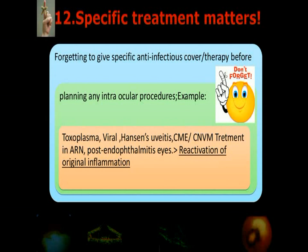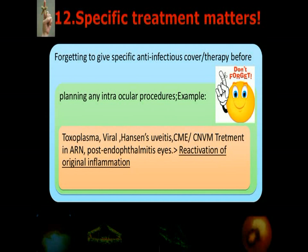Specific treatment of uveitis matters a lot when handling comorbidities like CMV, CNVM, and cataract. Not during the specific anti-infective treatment, giving treatments like IVMP or managing CNVM can cause reactivation of inflammation. So does inflammation reactivate in cases of toxoplasmosis, ARN, and Hansen's disease when handling other comorbidities.